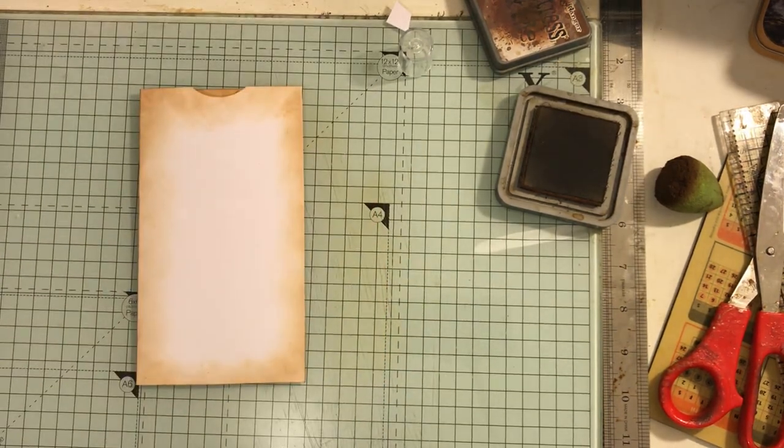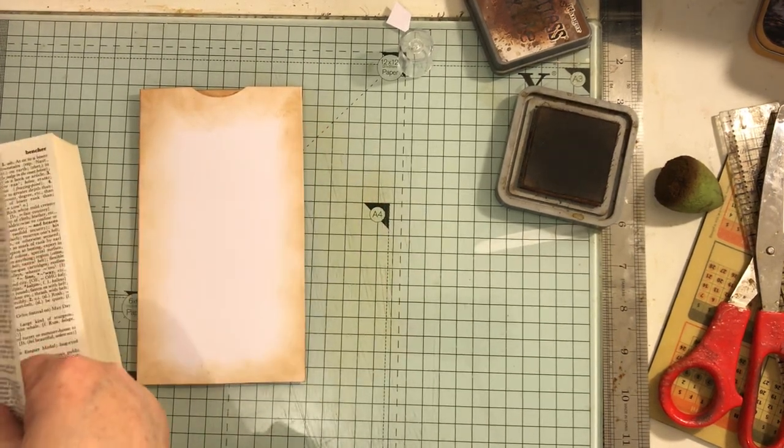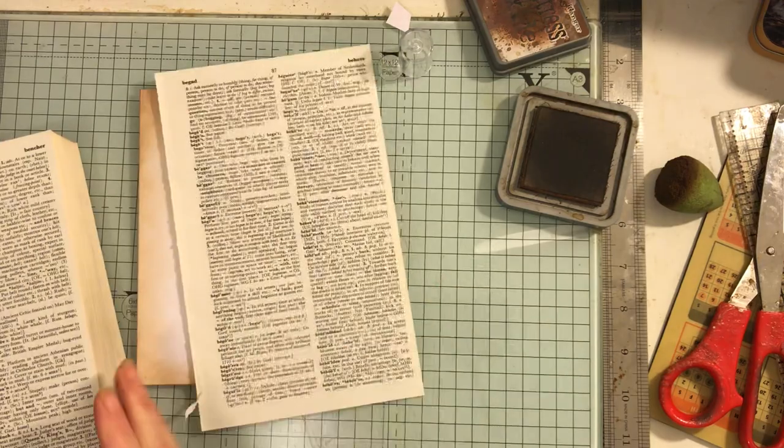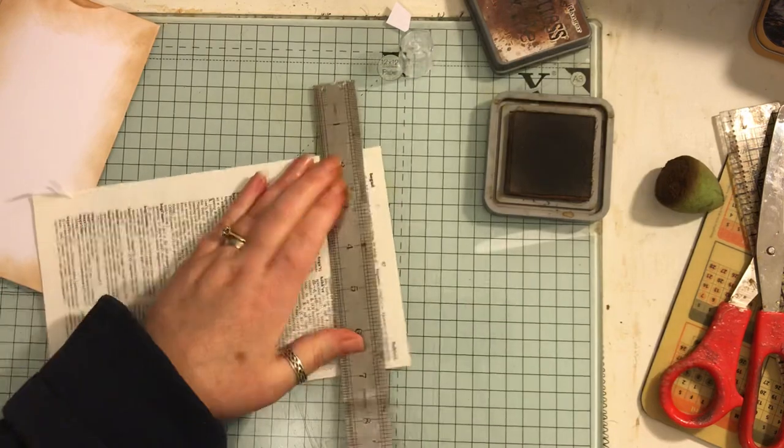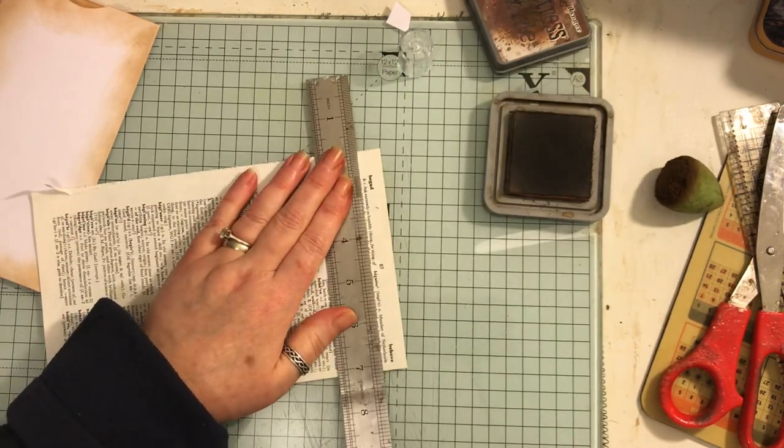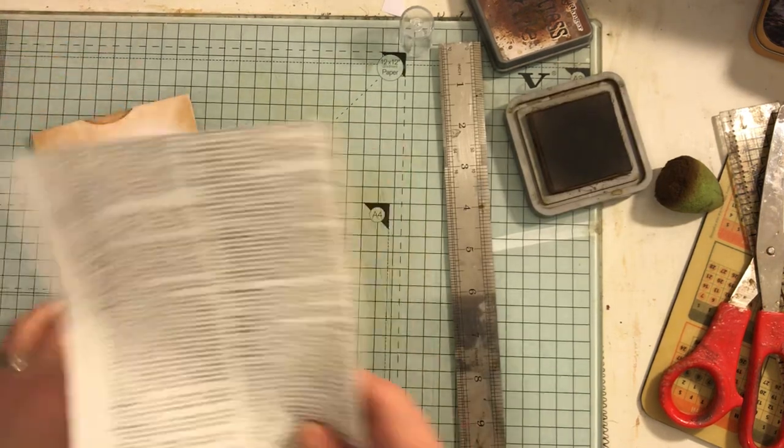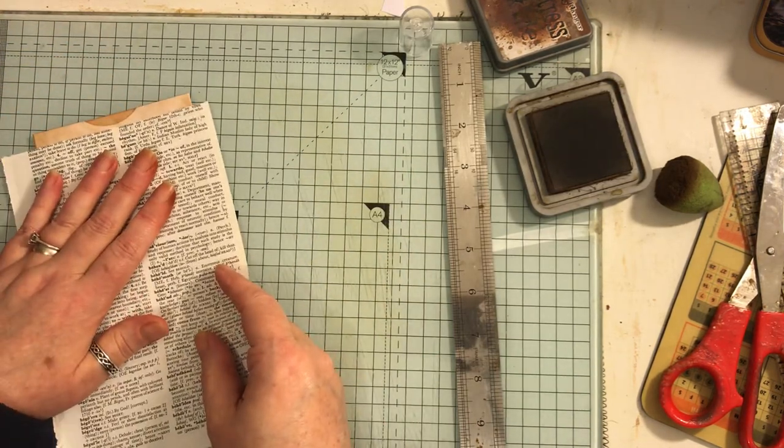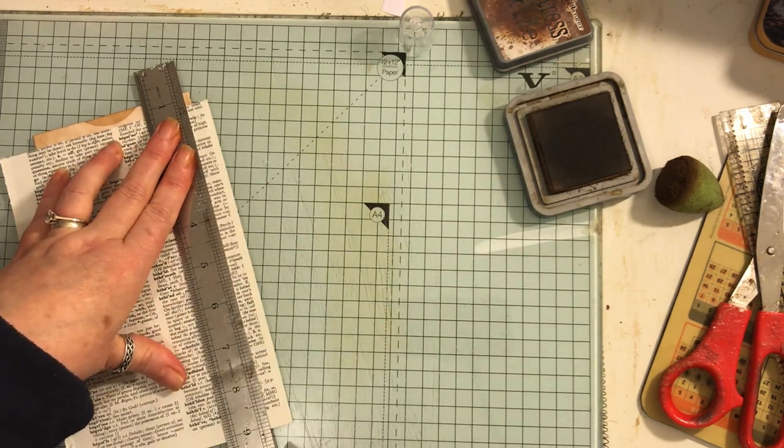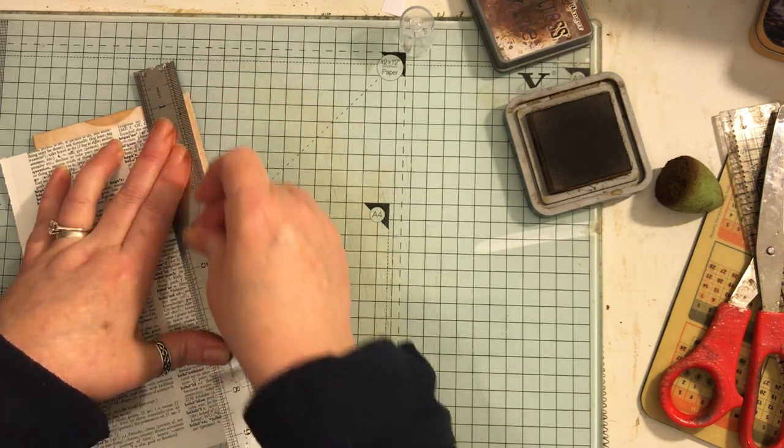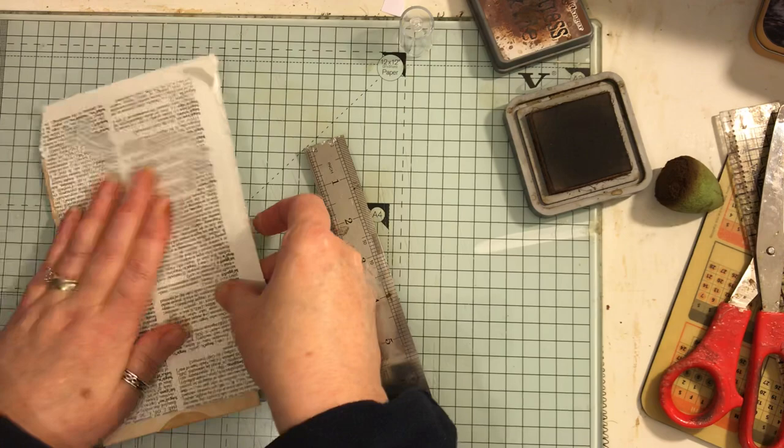Right, so now I'm just going to use, you can use a book page or anything, scraps that you have. I'm just using a dictionary page. I'm just going to use my ruler to do some tearing. Just obviously kind of measure it up so that you know where you're, you know how much you're going to tear off, so I'm looking at about that much, and that come off pretty well, and then again.